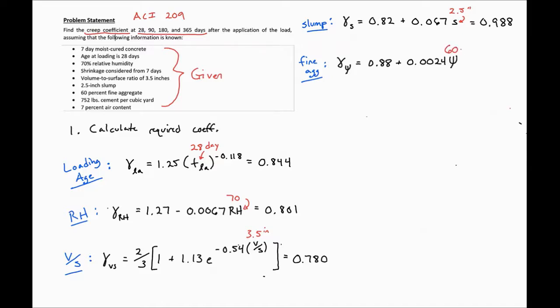So we'll plug in our 60% there, and we'll find our fine aggregate content factor to be 1.024.